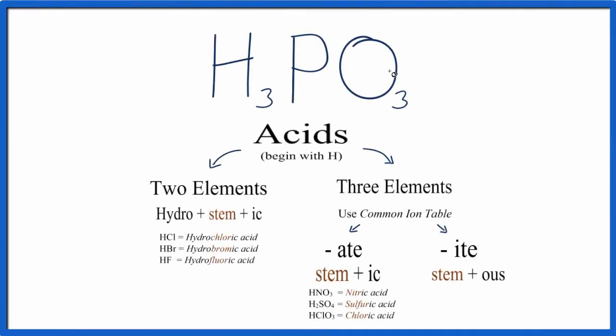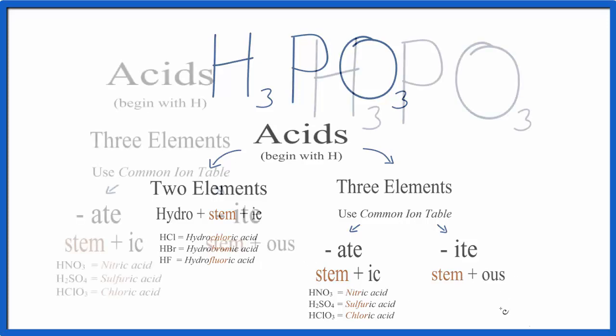To write the name for H3PO3, we use our flowchart here and the common ion table. We have H, P, and O. That means we have three different elements, and we'll use this side of our flowchart.